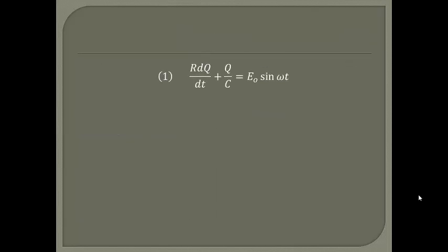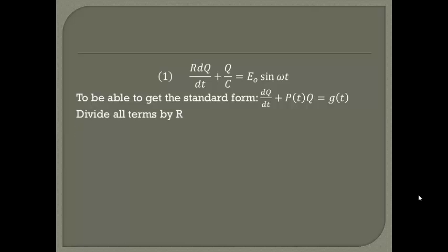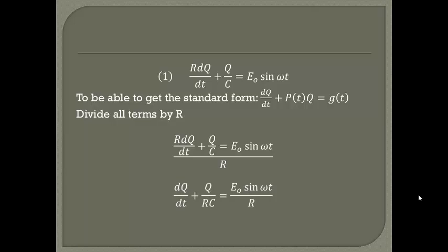Replacing E with E₀ sine(ωt), we have equation number 1: R dQ/dt + Q/C = E₀ sine(ωt). To get the standard form of a linear differential equation dQ/dt + P(t)Q = G(t), we divide all terms by R, giving us dQ/dt + Q/(RC) = E₀ sine(ωt) / R.